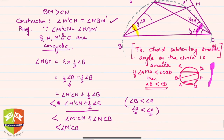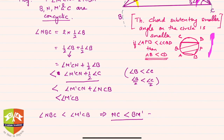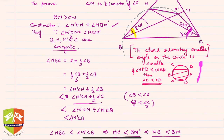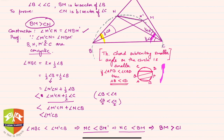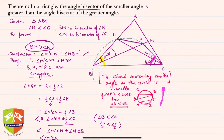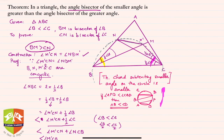Now BM' is part of BM, so BM' is less than or equal to BM. Since NC is less than BM', it follows that NC is less than BM as well. Therefore BM is greater than CN, which is exactly what we needed to prove. Hence we conclude that in a triangle, the angle bisector of the smaller angle is greater than the angle bisector of the greater angle.